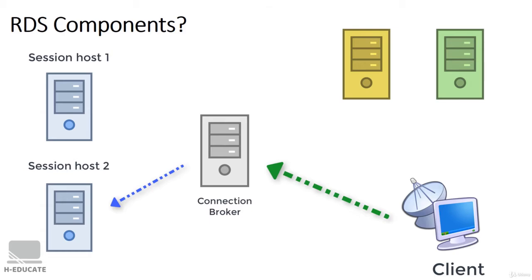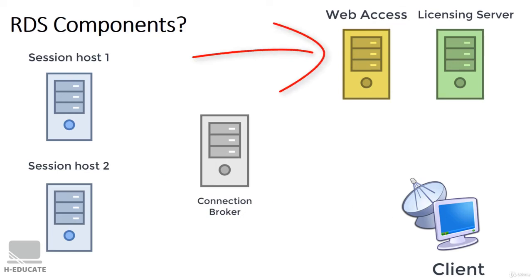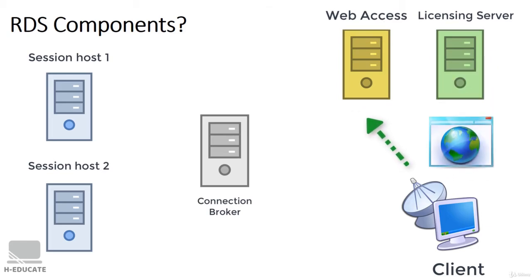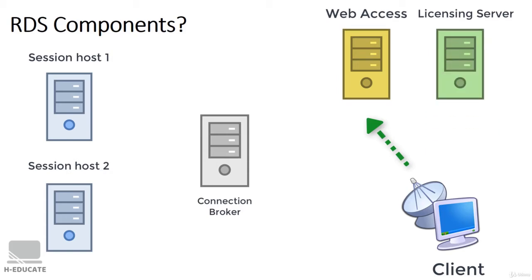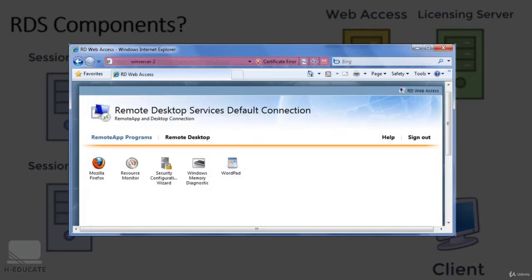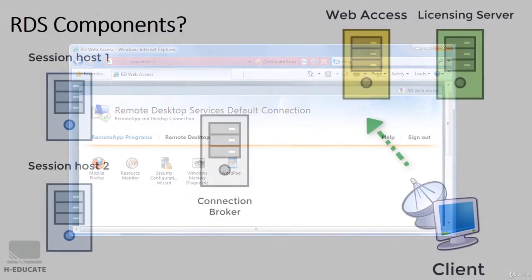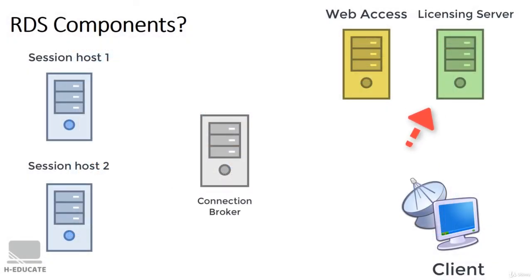Now what about Remote Desktop Web Access? Simply, the client connects to the web server through an internet browser and the server shows all available apps and sessions that the user can access, corresponding to your configuration and permissions. The web page looks something like this — you can see a list of applications and sessions the user can access. Lastly, we have the Licensing Server, which is responsible for managing licensing across your network and all your Remote Desktop servers or session hosts.